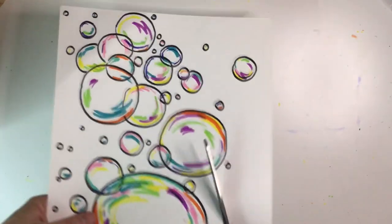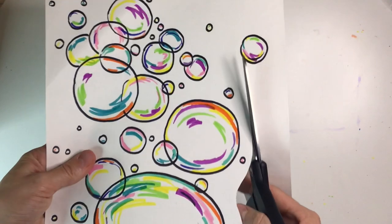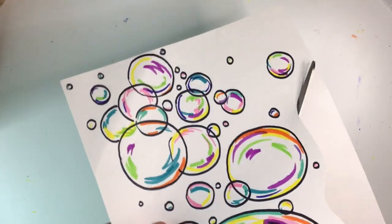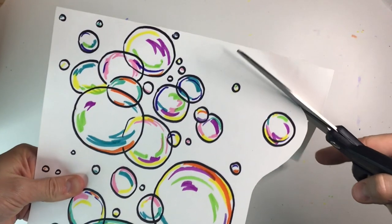I'm going to carefully cut around all of my bubbles, leaving a little bit of a white border. You can also get rid of some bubbles that maybe don't fit into your scene.